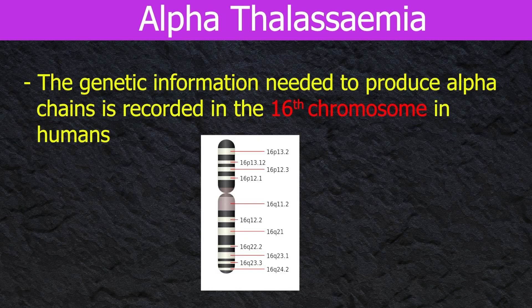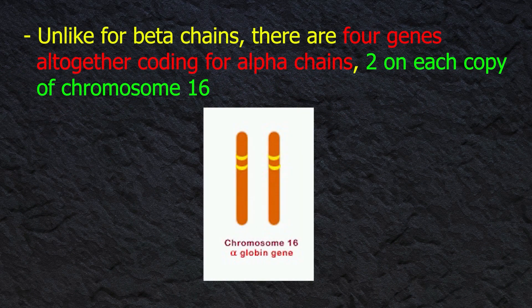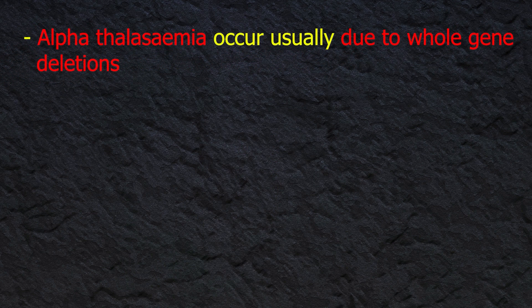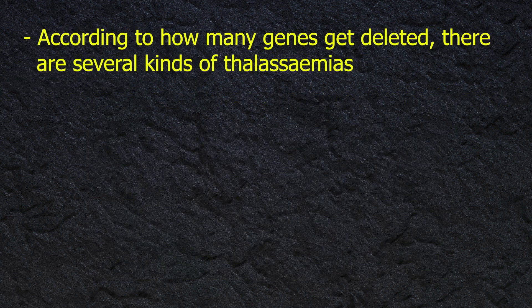The genetic information needed to produce alpha chains is recorded on chromosome 16. Unlike for beta chains, there are four genes altogether encoding for alpha chains — two on each copy of chromosome 16. Alpha thalassemia occurs usually due to whole gene deletions; point mutations are rare, unlike in beta thalassemia.